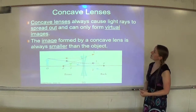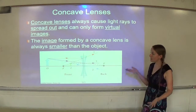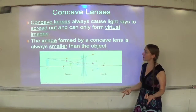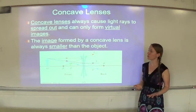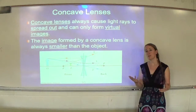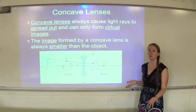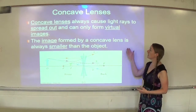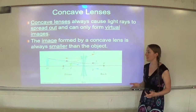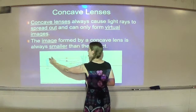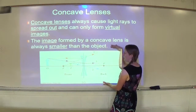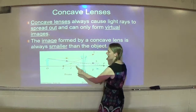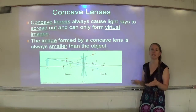Concave lenses always cause light rays to spread out, and because the image is where the light rays appear to come from, they can only form virtual images. Remember, a virtual image cannot be projected onto a screen or background. The image formed by a concave lens is always smaller than the object. The light rays spread out but appear to come from a virtual image location that cannot be projected.